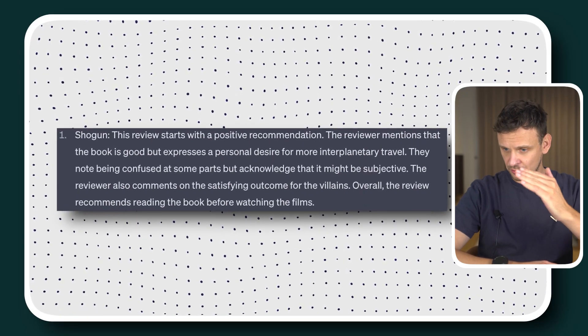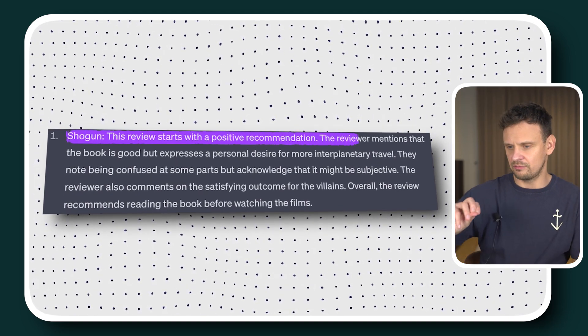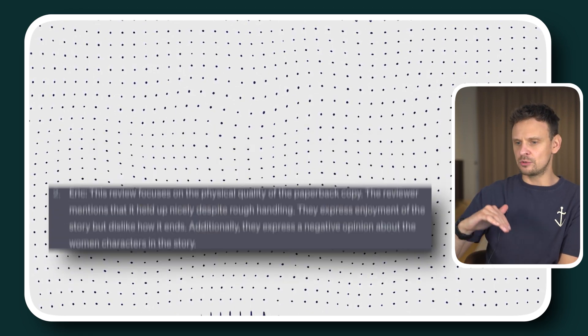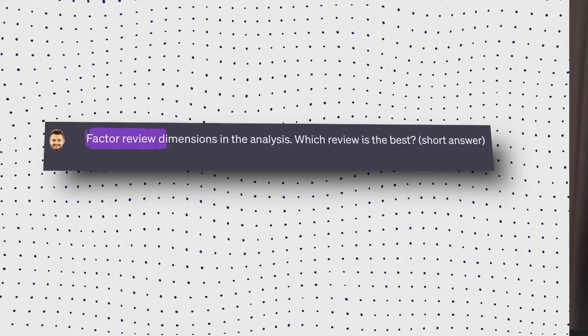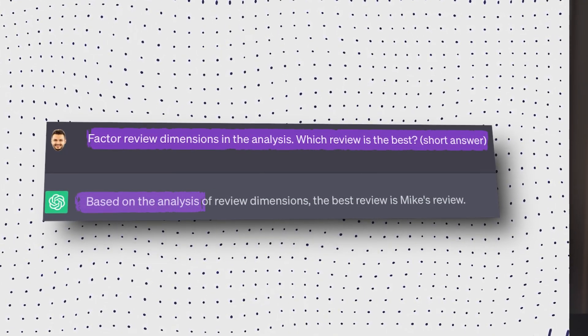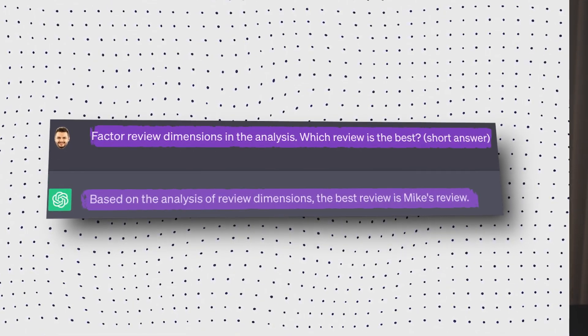After asking it to think step by step, ChatGPT breaks down each review — Shogun's, Eric's, Kathy's, Jamie's, Mike's — and still initially says Kathy's review is the best. But we can change the answer by asking it to evaluate its own step-by-step analysis. We simply prompted: 'Factor the review dimensions in the analysis — which review is the best? Short answer.' Based on the analysis, ChatGPT then concluded that Mike's review was the best.